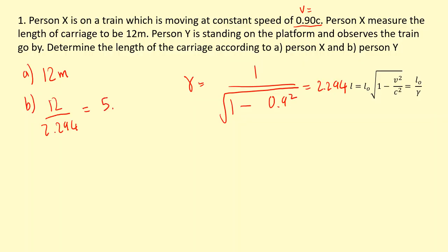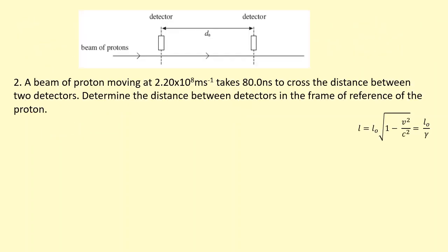A beam of protons moving at 2.2 times 10^8 m/s takes 80 nanoseconds to cross the distance between two detectors. Determine the distance between the detectors in the frame of reference of the protons. So firstly, just imagine you're a person standing here and you see that beam of protons moving past at that speed.